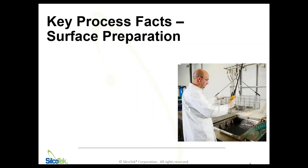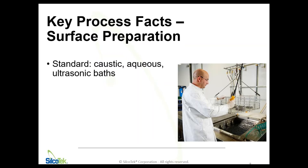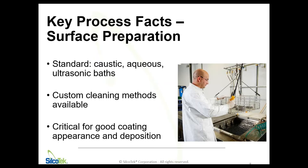Once the parts go through the receiving process, they are staged for surface preparation. Surface prep is absolutely critical — it's extremely important to a good end result with our CVD coating process. Typically, the parts are going to go through various aqueous baths with a caustic solution. We'll use ultrasonics and a caustic solution to remove any contaminants, greases, or even fingerprints, which are going to cause issues visually with the coating because of the temperatures we reach. We'll use custom methods like a solvent clean or other bath methods for very large parts, tubing, or unique geometry parts that aren't optimally processed in the standard aqueous baths.